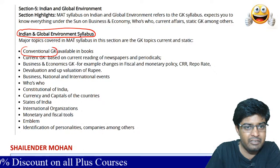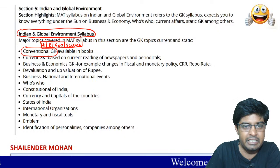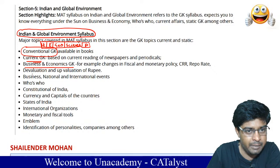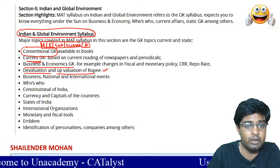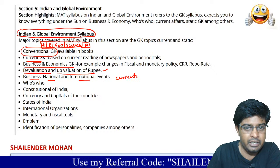Conventional GK means you need basic knowledge of history, economics, geography, and science — not in much detail. You need to know history and civics, current GK, current affairs, business knowledge and economic GK — such as devaluation and appreciation of the rupee, what is demonetization. Basic things you need to know: national and international events, which we will cover in subsequent classes.